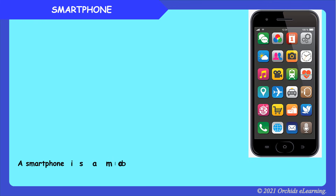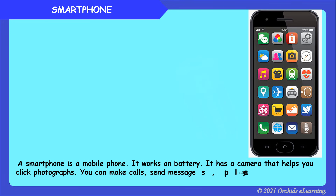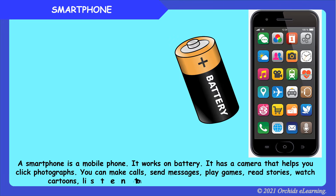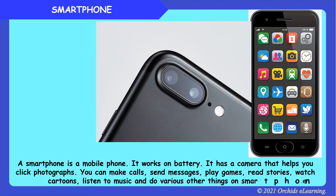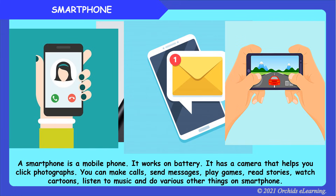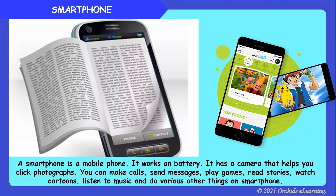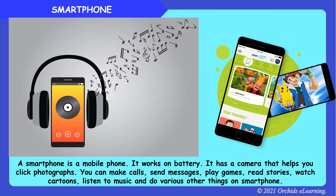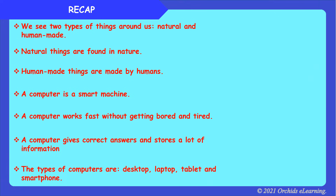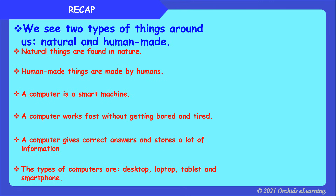A smartphone is a mobile phone. It also works on battery. It has a camera that helps you click photographs. You can make calls, send messages, play games, read stories, watch cartoons, listen to music, and do various other things on a smartphone.